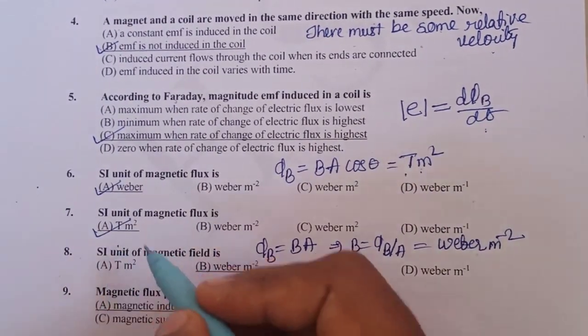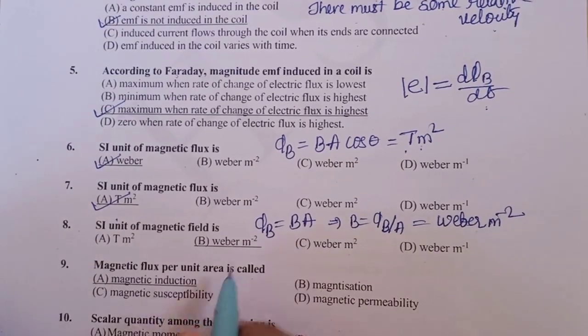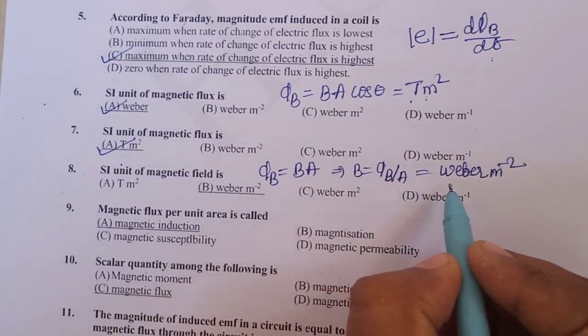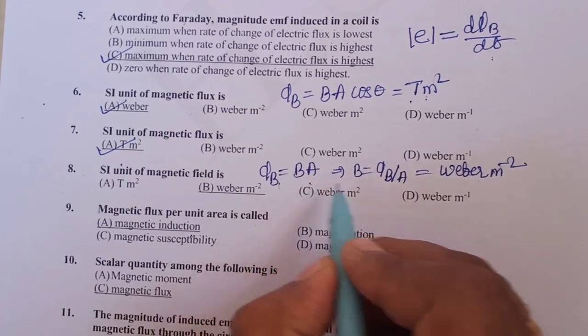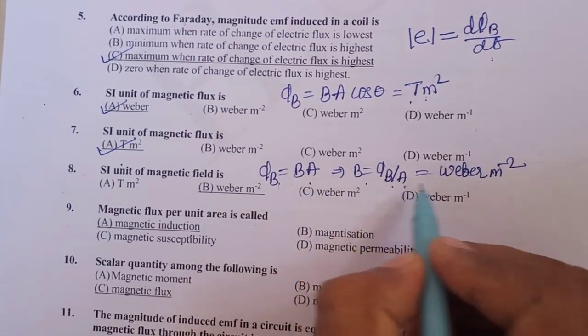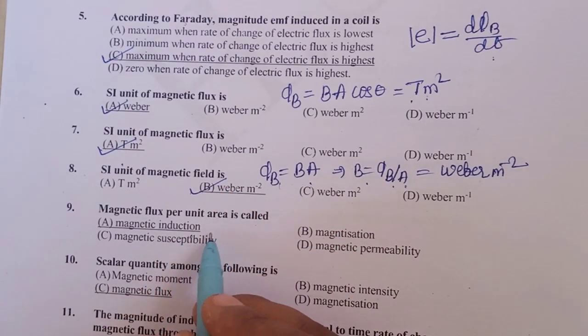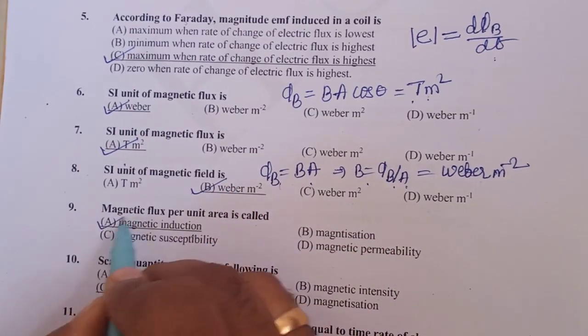SI unit of magnetic field is Tesla. And one more unit you can write it as, Φ_B is equal to BA or B is equal to Φ_B divided by A, that is Weber per meter square. That is option B. Magnetic flux per unit area is called magnetic induction.